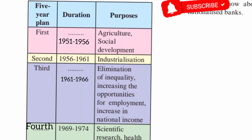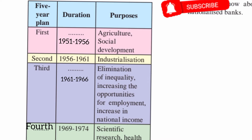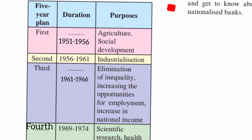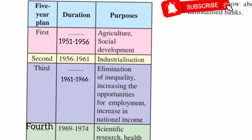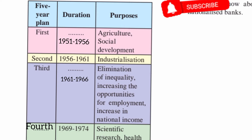Next, question number 2a: complete the following chart. You have to write the Five Year Plans — first, second, third, fourth, fifth. The first plan's duration is 1951 to 1956. The second is 1956 to 1961. The third is 1961 to 1966. Then you have to write the fourth Five Year Plan with its duration and purposes. Last is the fifth.